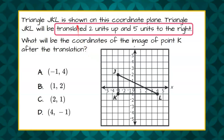We know that we have to translate the triangle two units up and five units to the right, and we're only asked about point K. So that means we only need to translate point K.